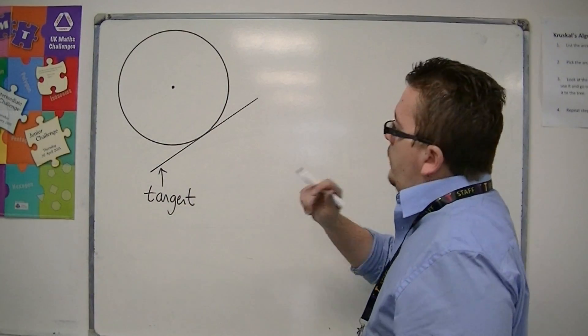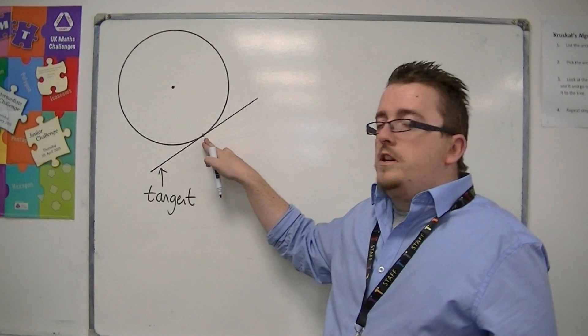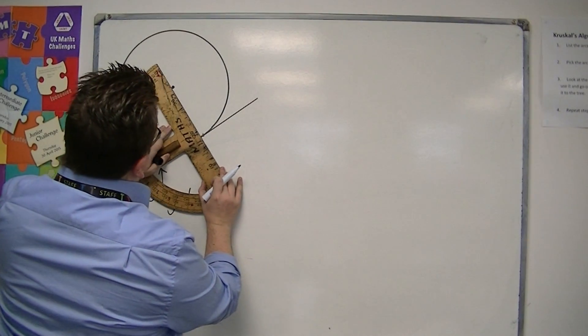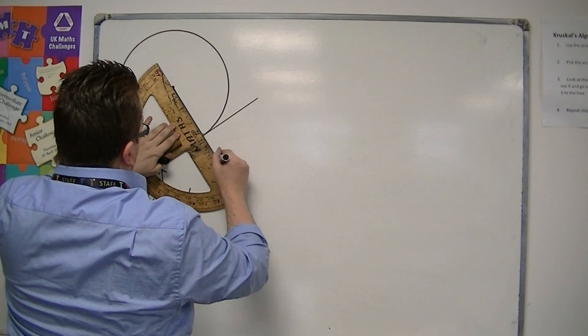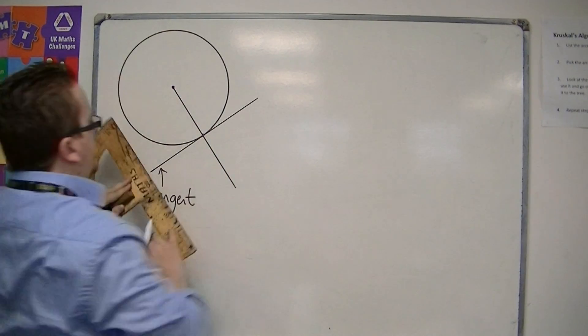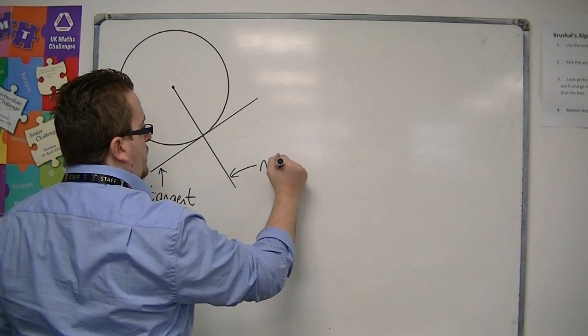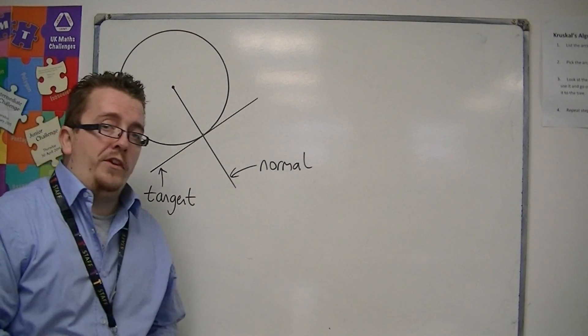And if I draw a line from the point where it touches the circle to the centre, so like that, then this line is known as a normal. It is a normal to the circle.